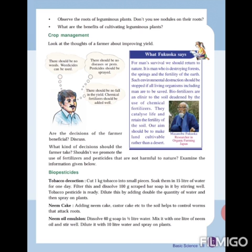The next bio-pesticide is neem cake. Adding neem cake, castor cake, etc. to the soil helps to control worms that attack roots. Another one is neem oil emulsion: dissolve 60 grams of soap in half a liter of water, mix with 1 liter of neem oil and stir well, then dilute with 10 liters of water and spray on plants. These three bio-pesticides can be made ourselves and are not harmful to nature.